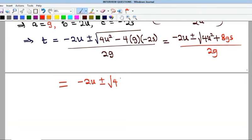If I do that, I'm going to get u squared plus 2gs. Okay, so close this bracket, and this is over 2g. So recall that, of course, I can take the square root of this...